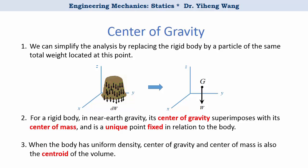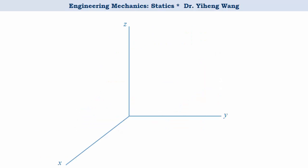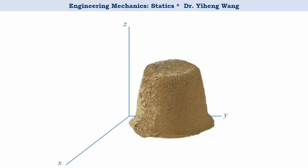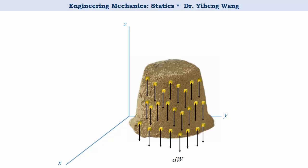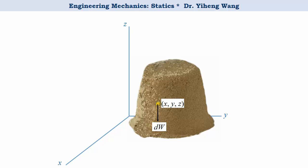So how do we find this center of gravity? Since location is always described in relation, we need to first put the rigid body into a fixed coordinate system. The body is made up of an infinite number of particles with differential weight dw. We first want to find the resultant moment caused by this distributed load about the x-axis. We start with an arbitrary particle located at coordinates x, y, z. The moment caused by its weight dw about the x-axis is calculated by dw times the moment arm — the perpendicular distance to the xz-plane, which is coordinate y.